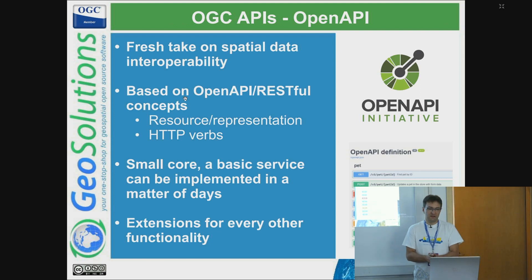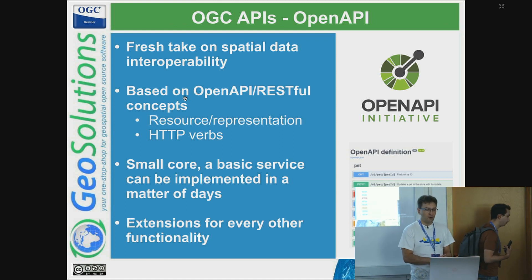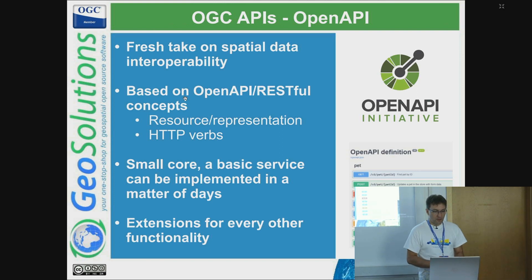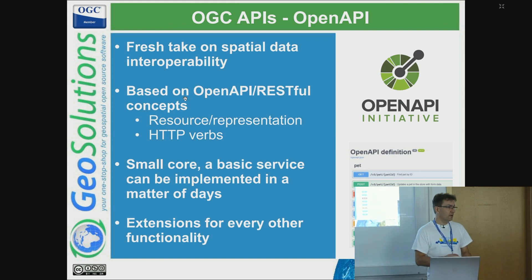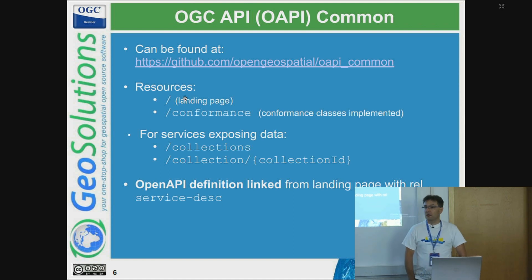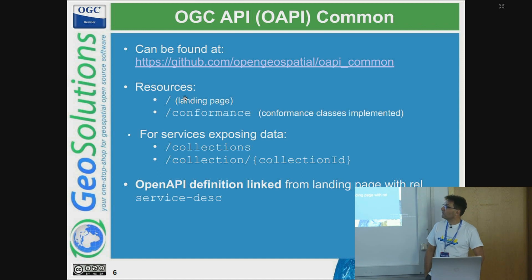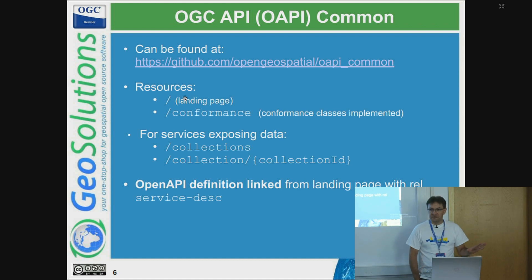It's a fresh take on web data interoperability, based on OpenAPI and REST concepts. You have resources, representations, and HTTP verbs or methods. Each API is based on a small core — a basic service that can be literally implemented in a matter of a few days — and extensions for every other functionality, with the core tending to be really, really small. The common elements are specified in OGC API Common, which adds the idea of a landing page as your entry point to an API, a conformance declaration listing conformance classes specifying what your implementation does. For services that expose data, you also have collections and the notion of a single collection resource.